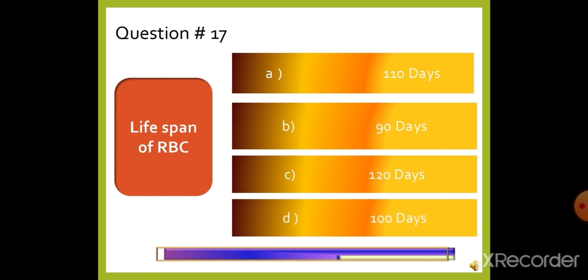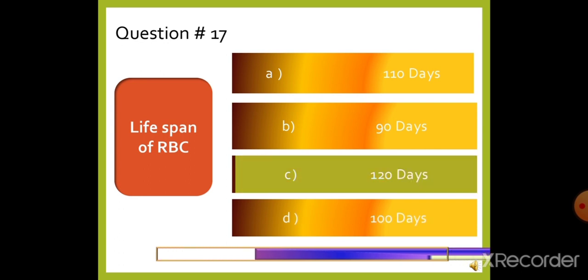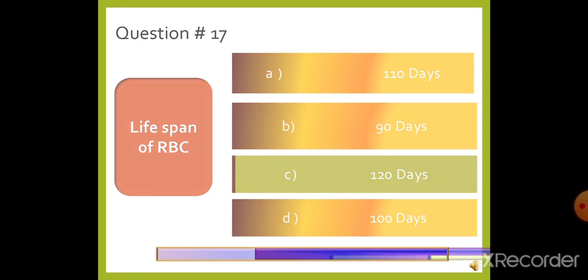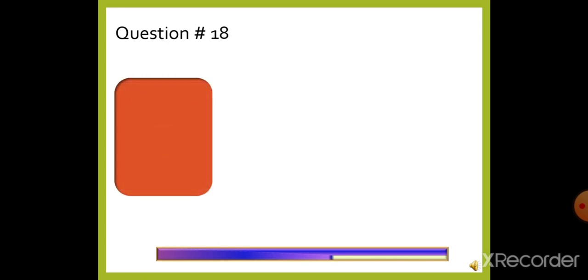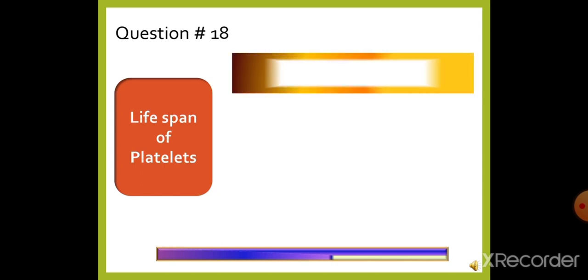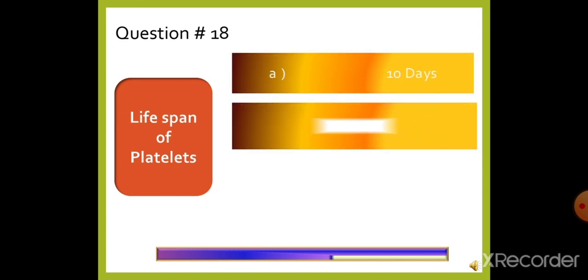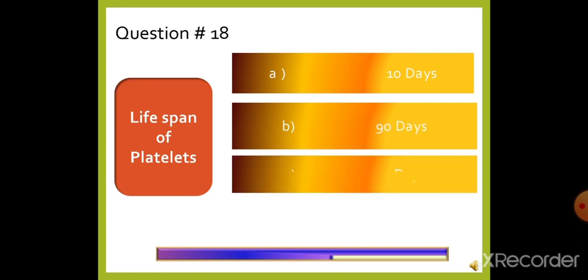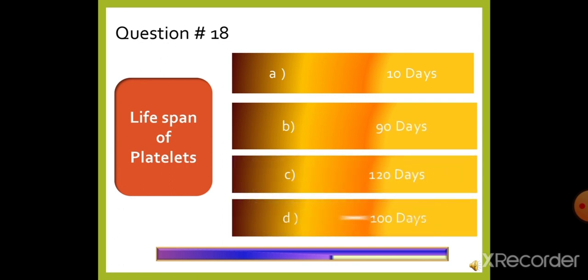Question 18: The life span of platelets is — option A: 10 days, option B: 90 days, option C: 120 days, or option D: 100 days. The right answer is option A, 10 days.